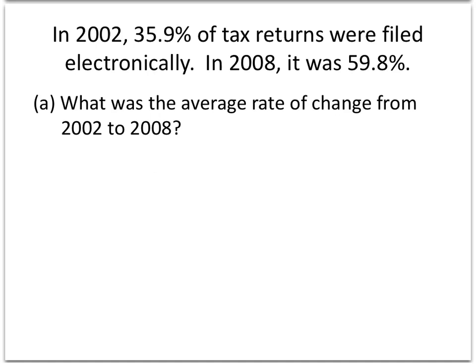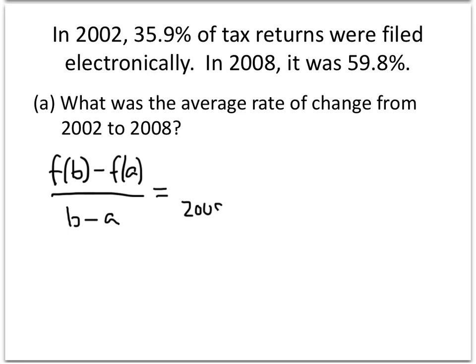The first question asks us for the average rate of change from 2002 to 2008. We know how to do this. The formula for the average rate of change is given by F(B) minus F(A) divided by B minus A. In this case, our A and our B are the years 2002 and 2008, so let's call B 2008 and A 2002.